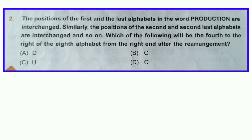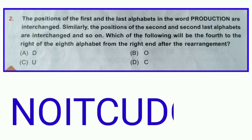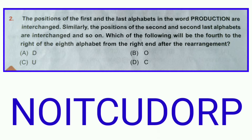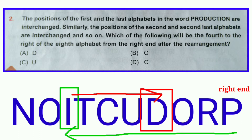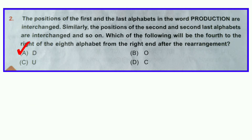Question number two: The positions of the first and last alphabets in the word PRODUCTION are interchanged; similarly, the positions of the second and second-last alphabets are interchanged, and so on. Which of the following will be the fourth to the right of the eighth alphabet from the right end after the rearrangement? Interchanging the letters, we get N-O-I-T-C-U-D-O-R-P. The eighth alphabet from the right end is I, and the fourth to the right of I is D. So option A is correct: D.